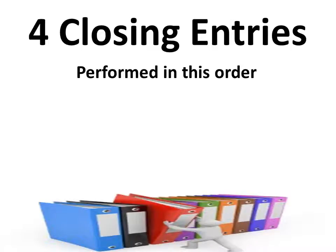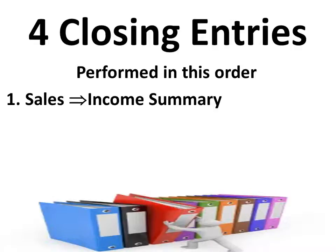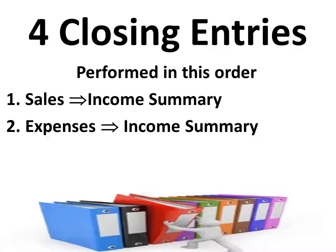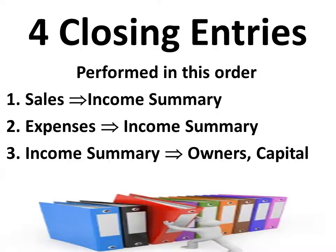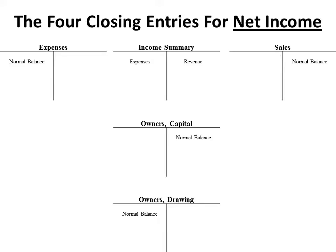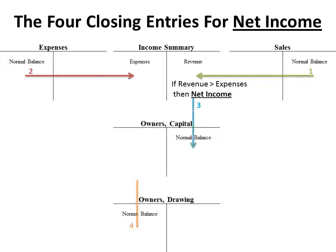We have four closing entries that we have to perform, and it is extremely important that you do them in this order. First, we close sales to income summary. Then we close expenses to income summary. Then we close income summary to owner's capital. And then owner's drawing into owner's capital. Income summary exists because debits still have to equal credits in every single entry — without it, it would be very difficult to balance debits and credits.